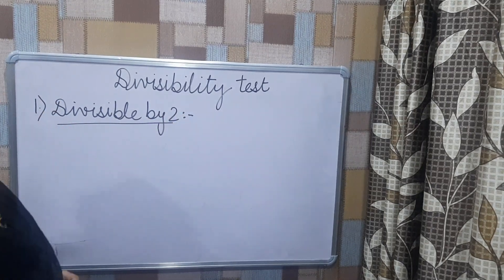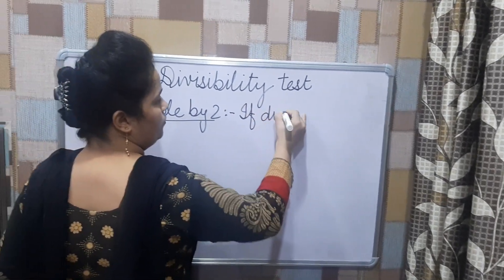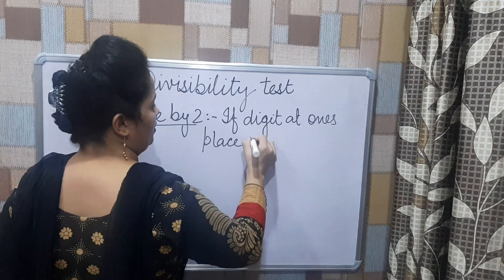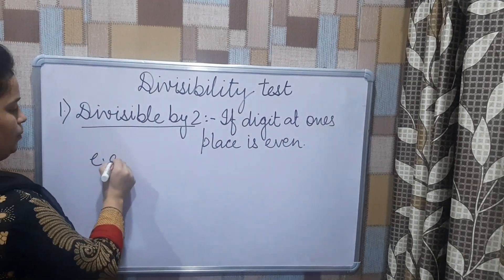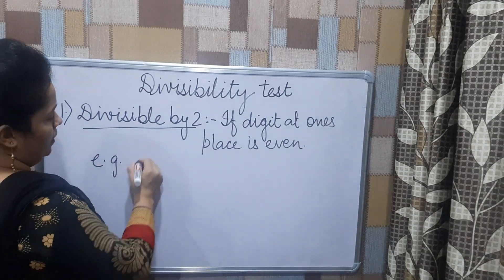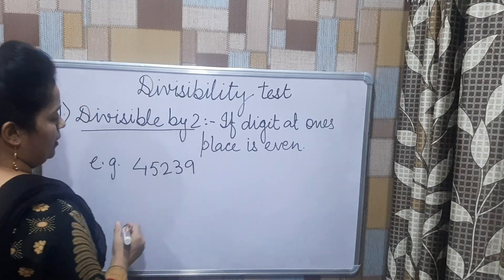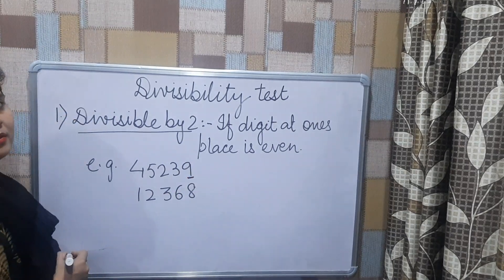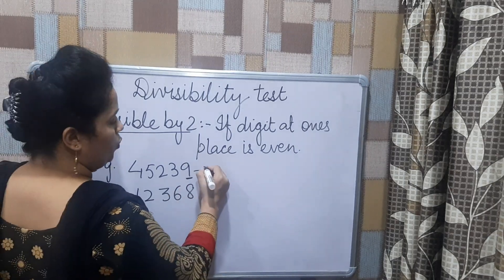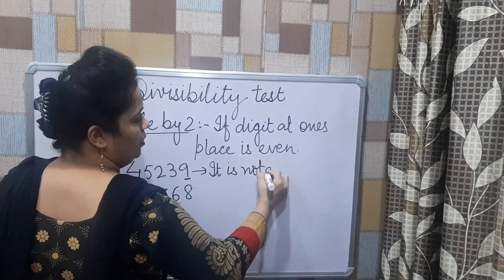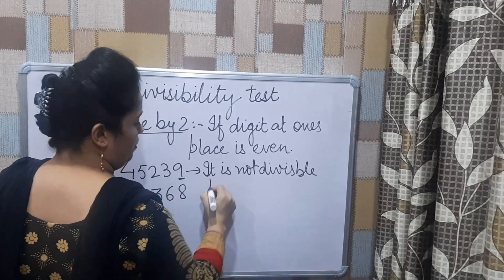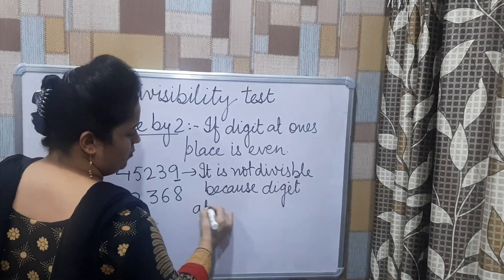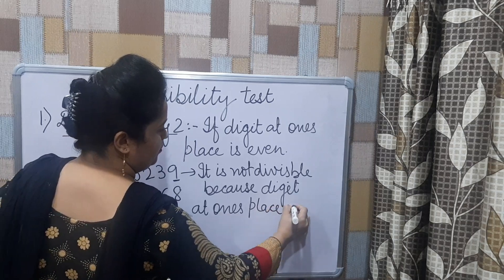A number is divisible by 2 if the digit at the 1's place is even. Let us discuss with the help of an example. If I am taking the number 45,239, the digit at the 1's place is 9, and as you know, 9 is an odd number. So it is not divisible because the digit at the 1's place is odd.